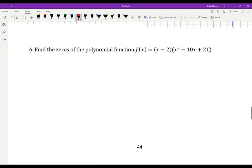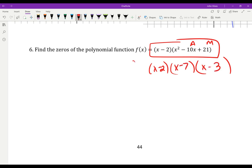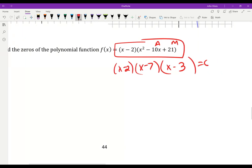Last one. Find the 0s of this polynomial. So I'm going to cheat here. I could do this by factoring. I could say what multiplies to 21 and adds to negative 10. I could do this and say negative 7 and negative 3. Well, if those are my 0s, sorry, those are my factors. Those are my factors. What are my 0s? 2, 7, and 3. That's the answer.